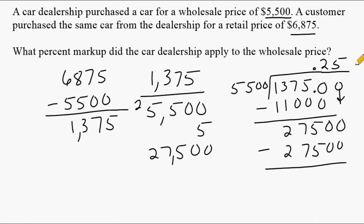So to convert this into a percentage, we just take the decimal point and move it two spaces to the right. So we would say that the car dealership marked up the wholesale price by 25%, which means the consumer is going to pay 125% of the wholesale price. Let's do another example.